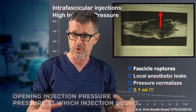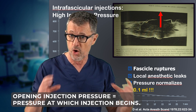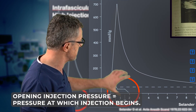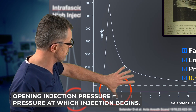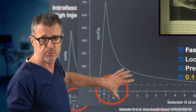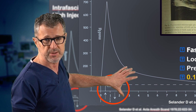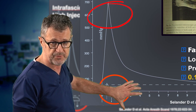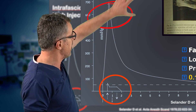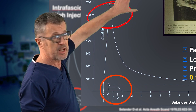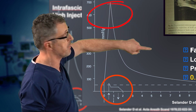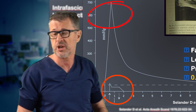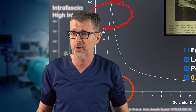We monitor the opening injection pressure. Here you can see that the injection pressure during injection around the fascicle or outside of the nerve is very low, and that the opening injection pressure is very high once you inject into the fascicle.